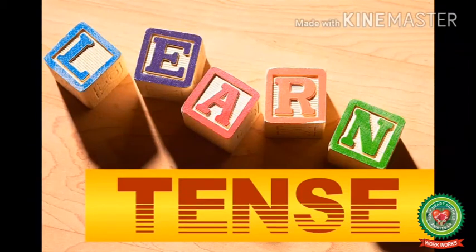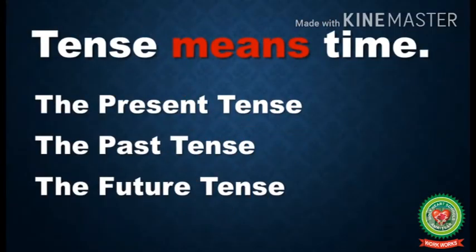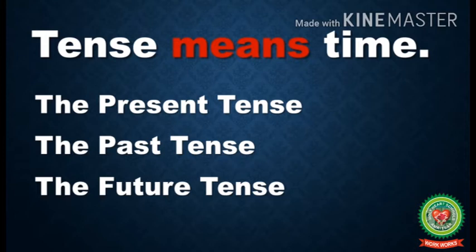First of all, I will tell you the meaning of tense. Children, tense means time. There are three kinds of tenses: number one, the present tense; number two, the past tense; number three, the future tense.